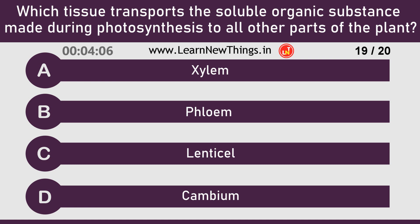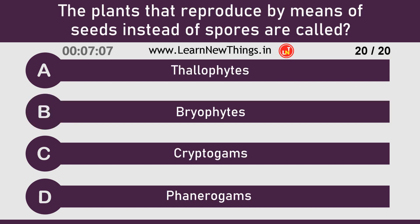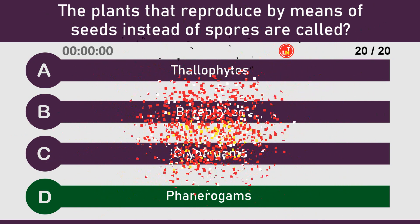Phloem. The plants that reproduce by means of seeds instead of spores are called Phanerogams.